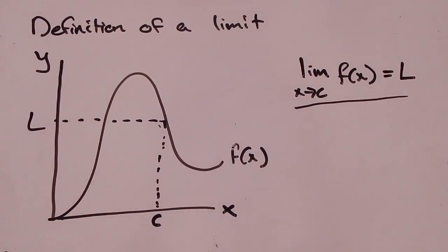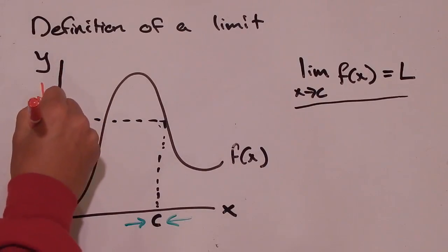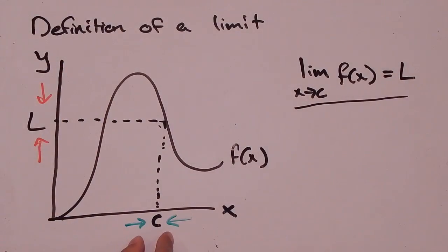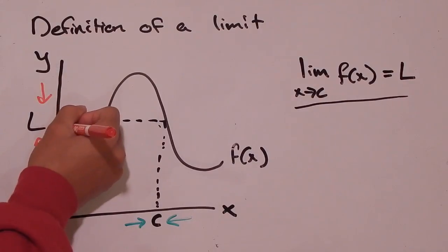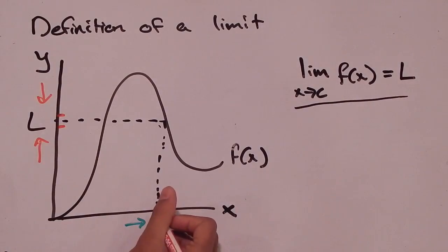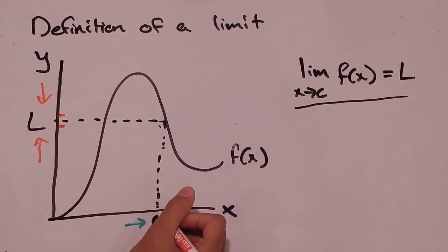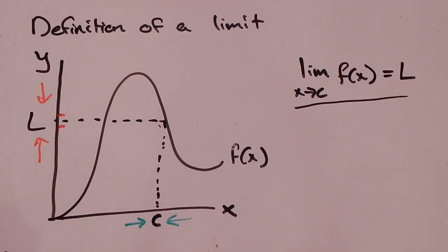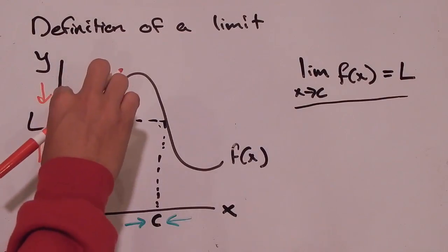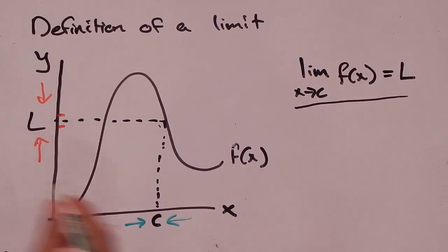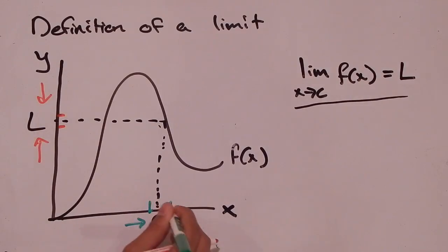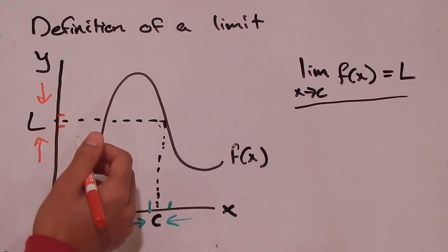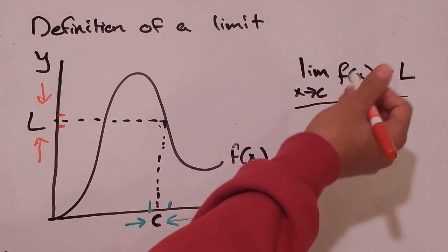As these x values approach c, my f of x values approach L. As they get infinitely close to c, I still get y values that are getting infinitely close to L. So close that I could draw an interval around L as small as I wanted, and I could find an interval around c such that all the x values in that interval around c, except maybe c itself, would return f of x values in that interval around L. That's actually how we ended up defining the limit.